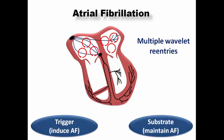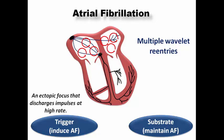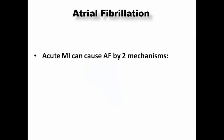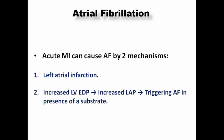Atrial fibrillation requires a trigger — usually ectopic foci in the pulmonary veins — and a substrate of multiple-wavelet re-entries to maintain it. Acute MI can cause AF by two mechanisms: first, the left atrial tissue itself can undergo ischemia or infarction, inducing AF directly. Second, in extensive infarction like anterior STEMI, increased LV end-diastolic pressure raises left atrial pressure, triggering AF. The presence of AF indicates a worse prognosis, reflecting larger infarct size.